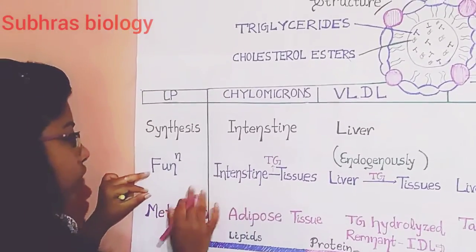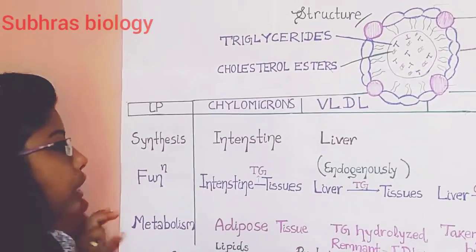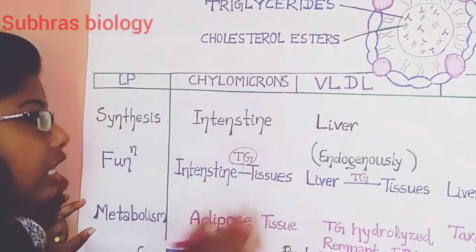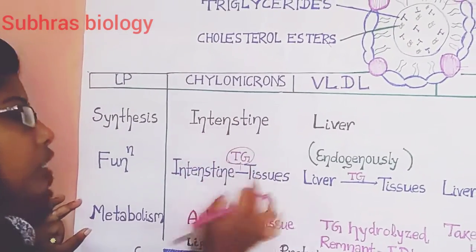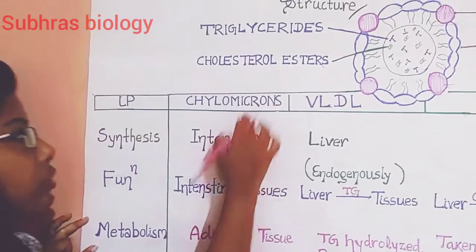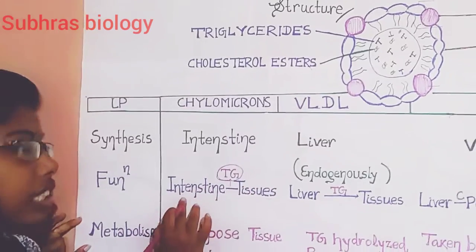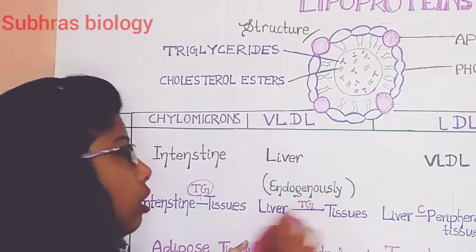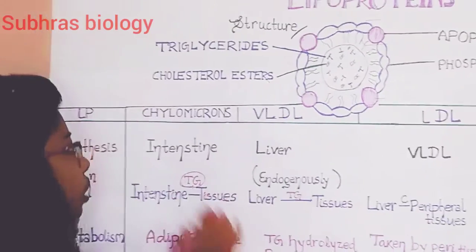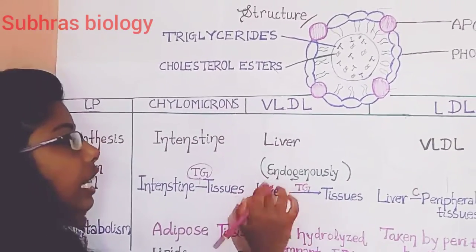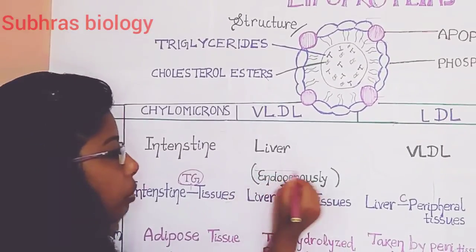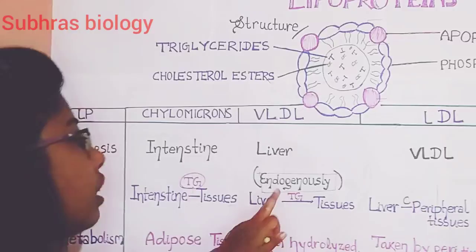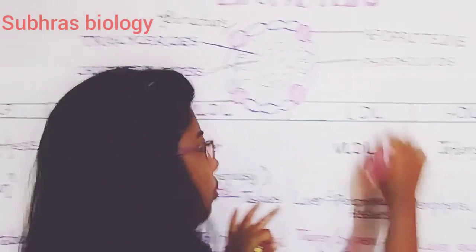Next, we are going for the function. Chylomicrons, as a lipoprotein, transports triacylglycerols. It transports triacylglycerols from the intestine because it is produced from the intestine — so it is transported from intestine to tissues. The function of chylomicron is it transports triacylglycerols from intestine to tissues. And the VLDL also does the same function — it transports triacylglycerols from the liver to tissues, but the difference is that it transports endogenously.